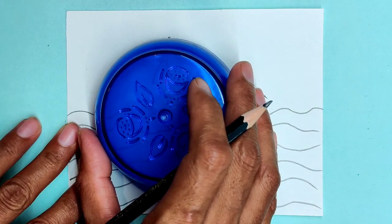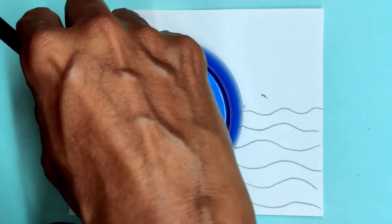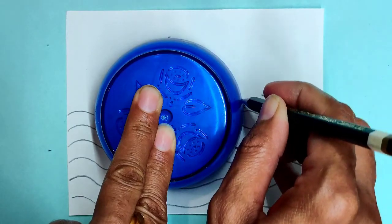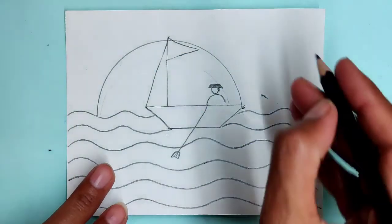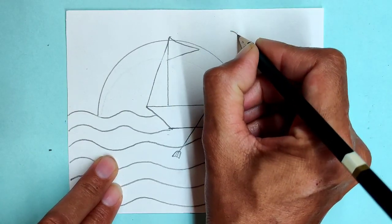Take any circle object for the sun drawing. Draw V-shapes for flying birds.